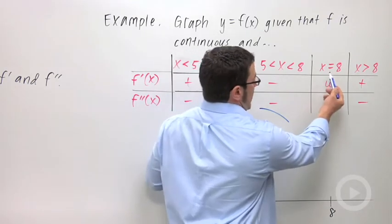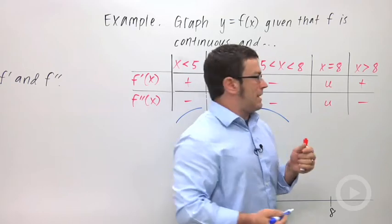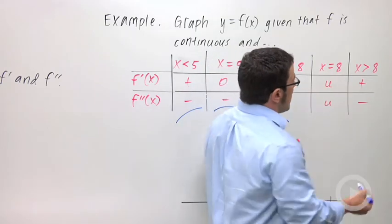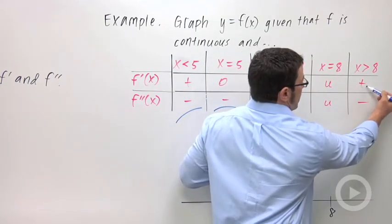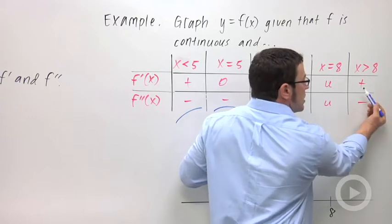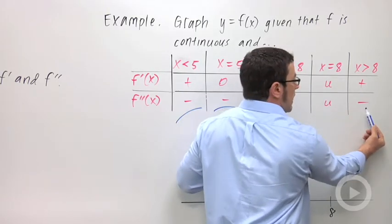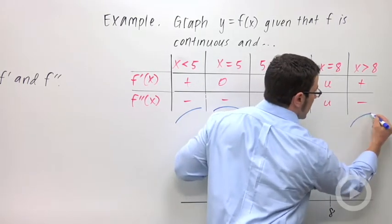At x equals 8, both derivatives are undefined. So let me come back to that. And then here, at x greater than 8, f prime is positive, f double prime is negative. So f should be increasing and concave down. Increasing and concave down again looks like this.